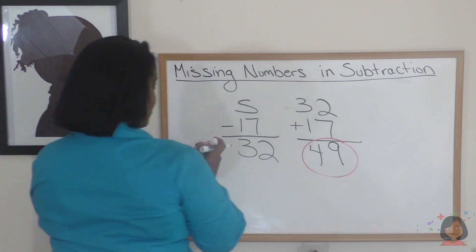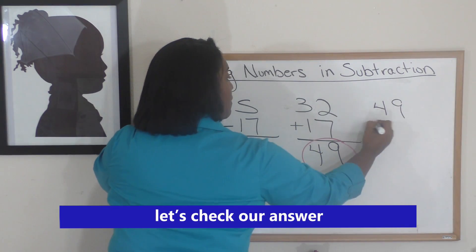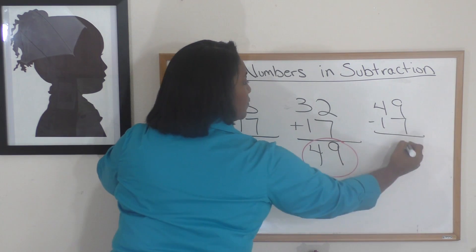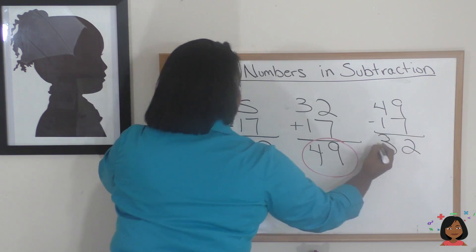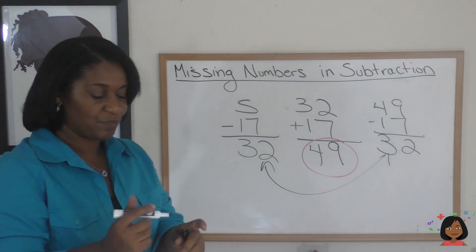But let's go ahead and check it. We're going to do 49 minus 17, and we're going to get 32. Look at that. It means it's the correct answer.